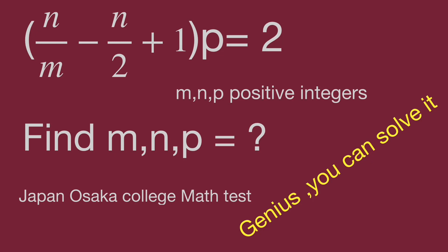We have the quantity n over m minus n over 2 plus 1, multiply p equal to 2. And m, n, p are positive integers. Find the value of m, n, p.